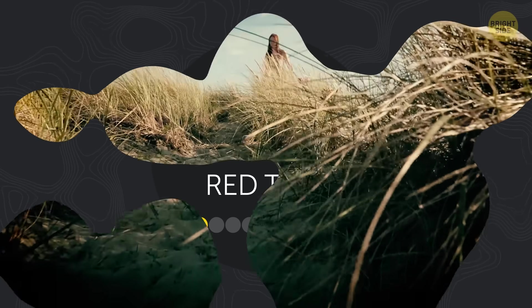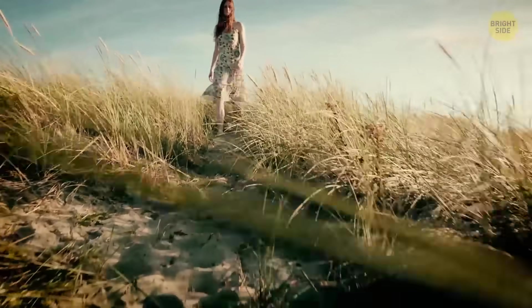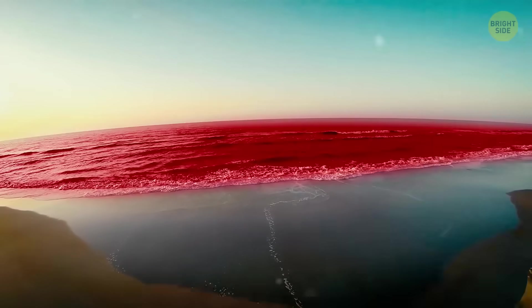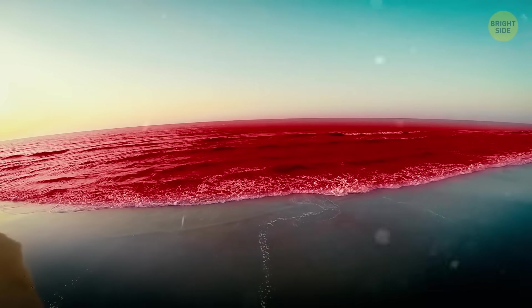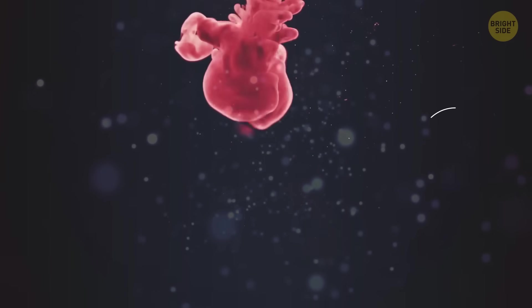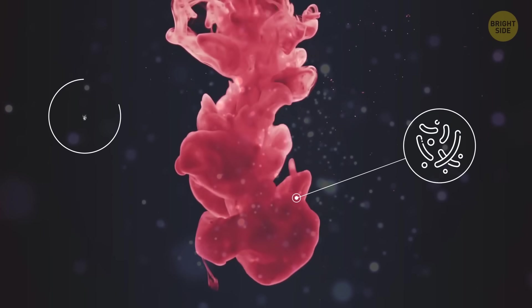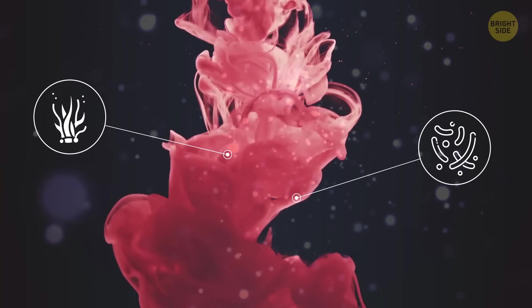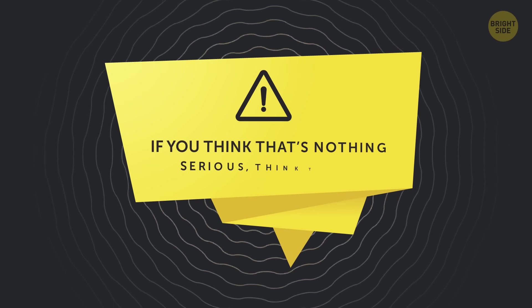Red Tide. One day you decide to enjoy a stroll along the beach, but once you come closer to the shore, you notice something shocking - the water has a spine-chilling red color. This unusual hue is caused by algae, microscopic marine plants blooming or rapidly growing in the ocean waters. If you think that's nothing serious, think twice.